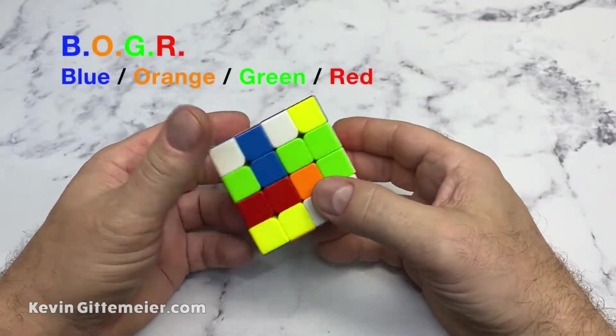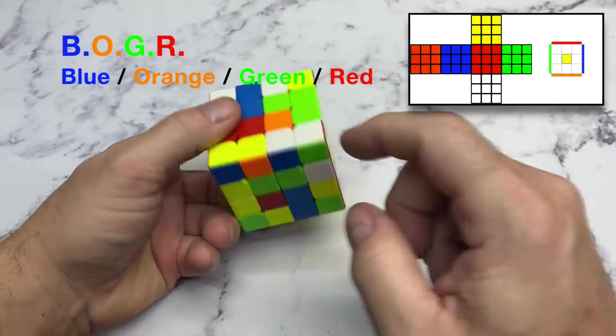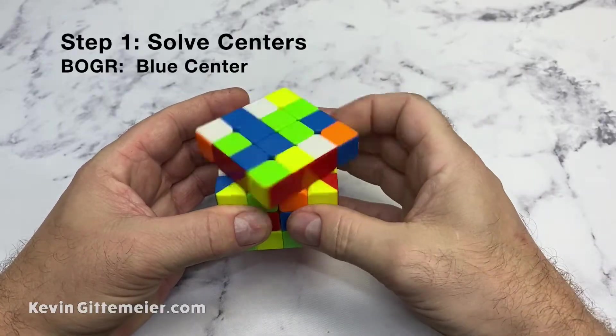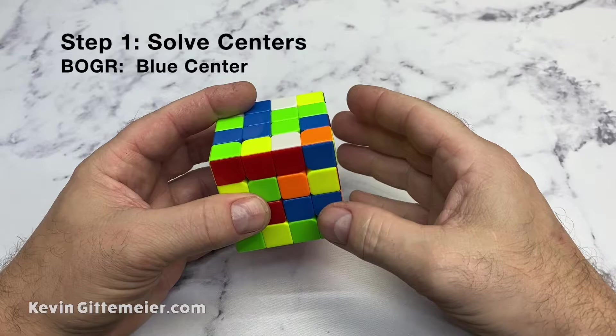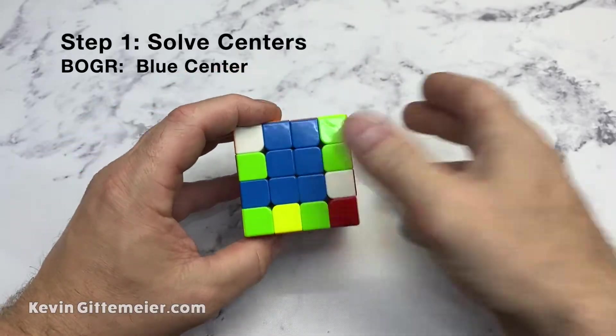Now I solve mine in bogger color order, so I'll start with blue, orange, then green, red. So I'm looking for two blues. So I see those don't match, so if I move that, that forms a bar. Now I'm looking for two more blues. These match. Now I have another bar, and I join these two bars.